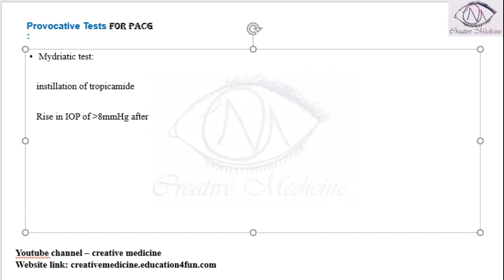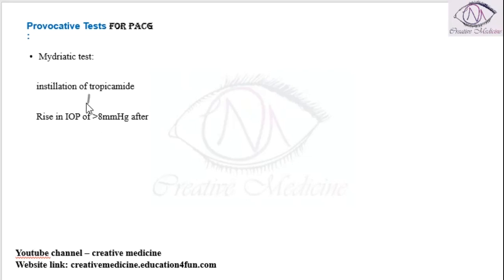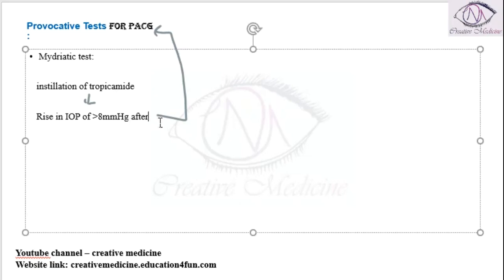After giving tropicamide, if there is a raise in intraocular pressure, then it states that it is primary angle closure glaucoma. Tropicamide is a mydriatic, so when you try to dilate the pupil and there is a raise in intraocular pressure, this indicates primary angle closure glaucoma.